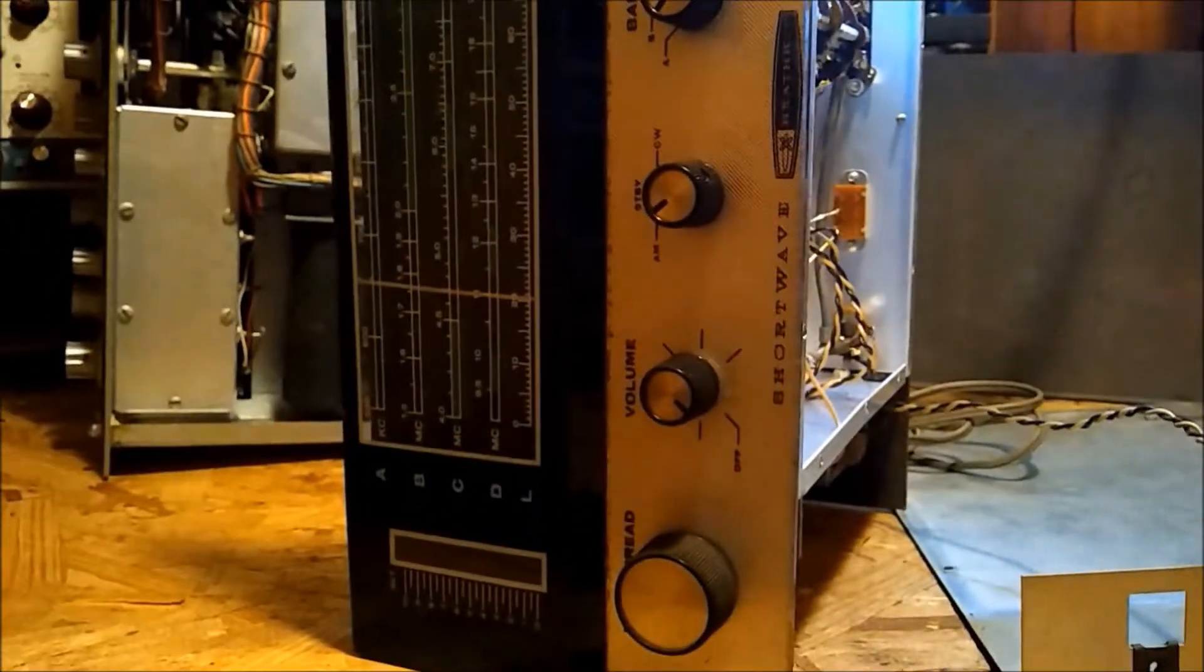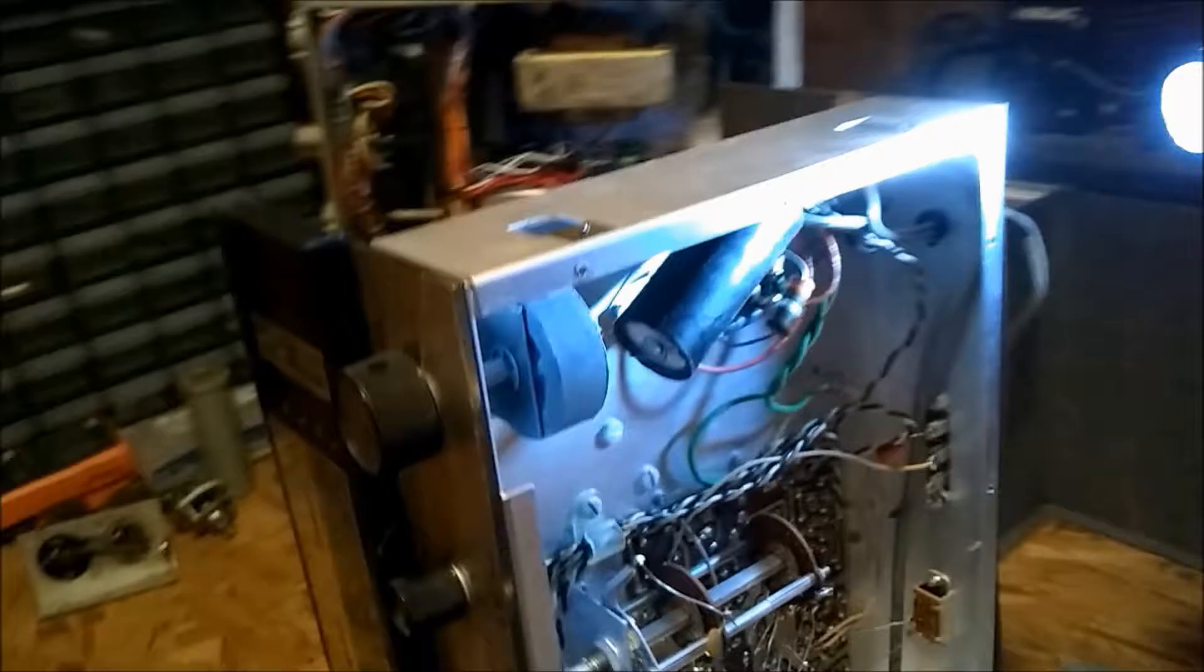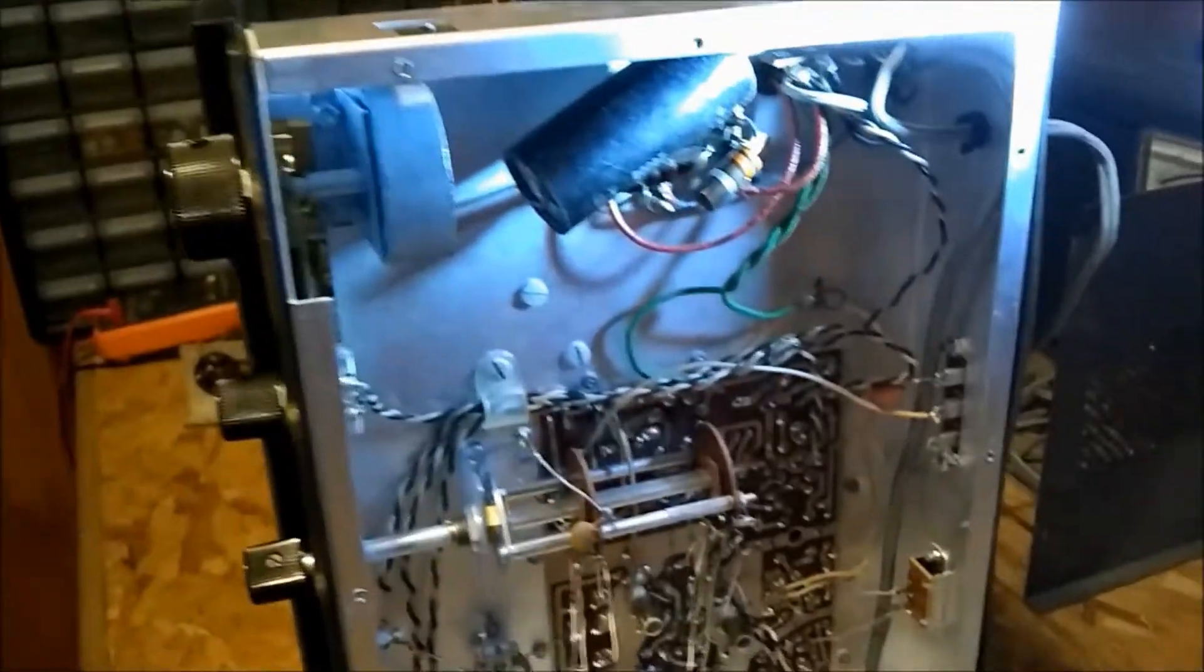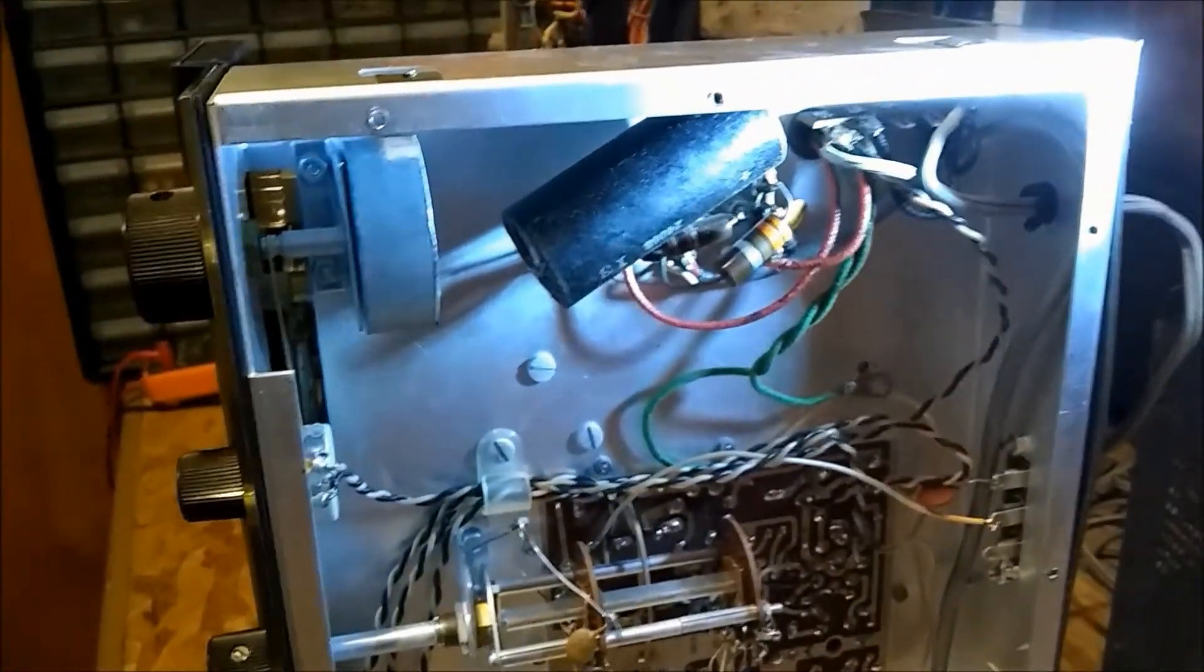Okay, this is the Heathkit GR64 shortwave receiver. Got all the little pieces inside of it floating around that you always get. Put the vacuum tubes back where they belong.